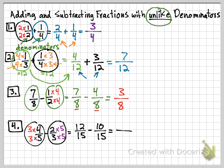They have the same denominator, 15, so I keep the 15 and just subtract the numerators: 12 minus 10. 12 minus 10 is 2, so my final answer is two over 15.